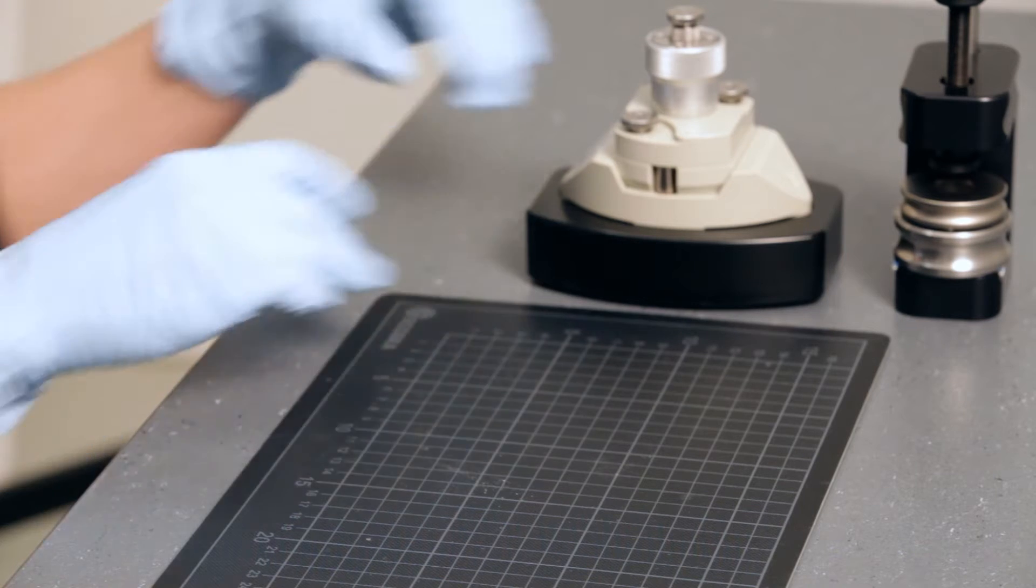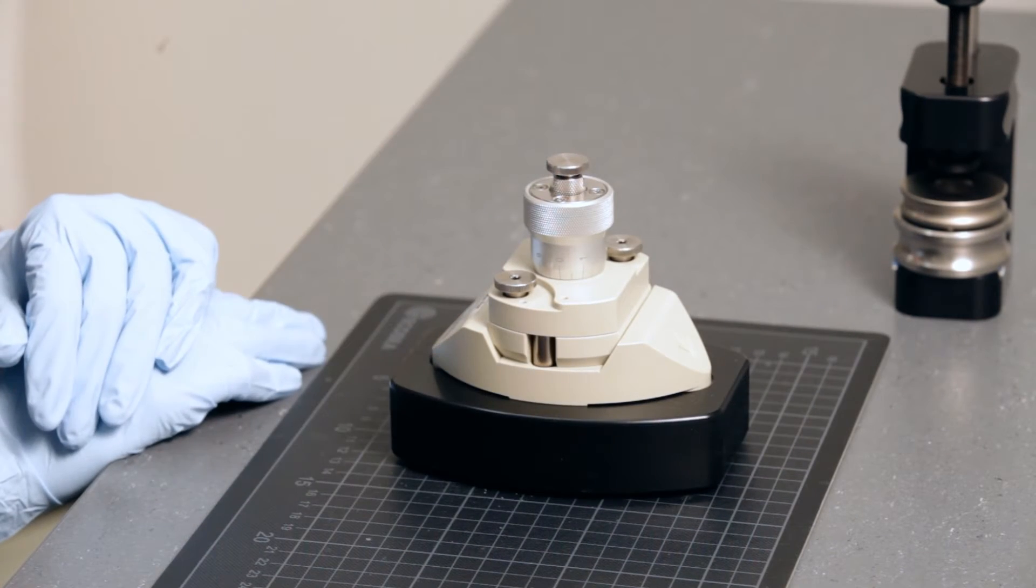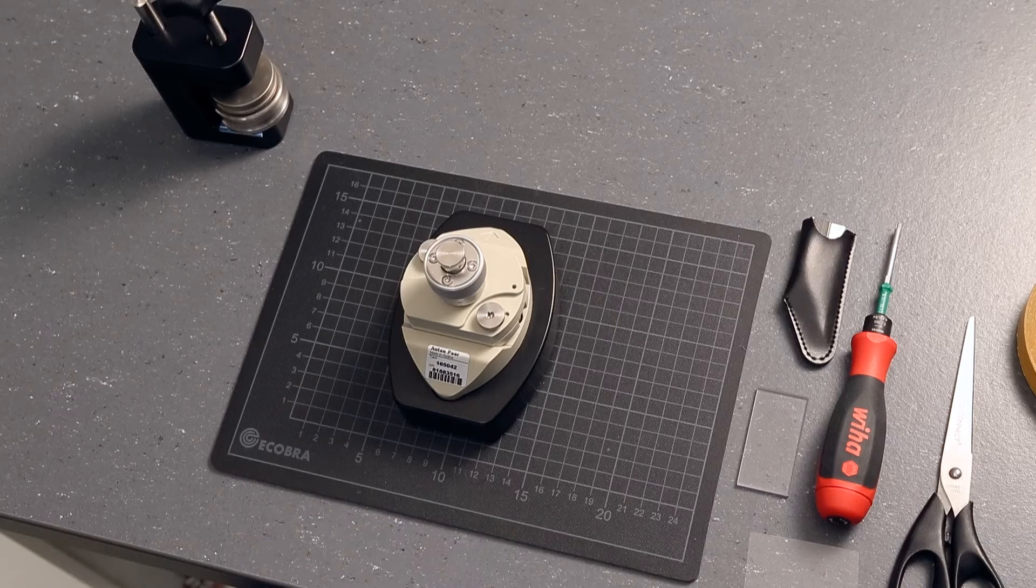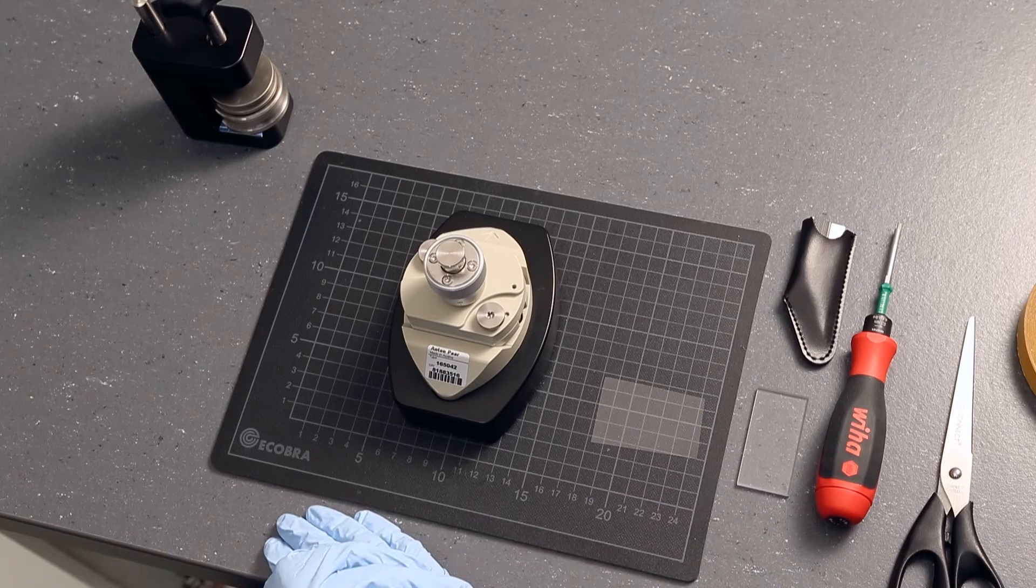This video shows you how to mount your sample in the adjustable gap cell for discs and how to mount the cell in Surpass III. We are going to mount a polymer foil.